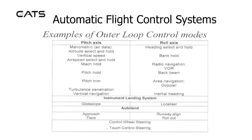Examples of outer loop control modes are in the pitch axis: manometric air data, altitude select and hold, vertical speed, airspeed select and hold, mach hold, pitch hold, pitch trim, turbulence penetration, and vertical navigation.